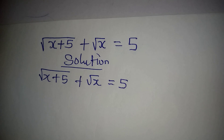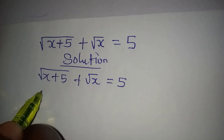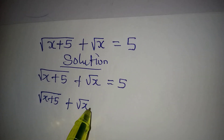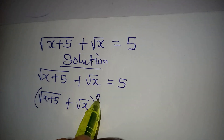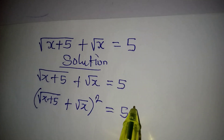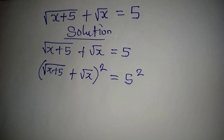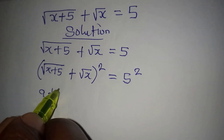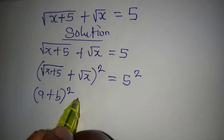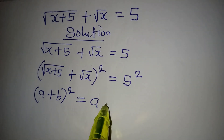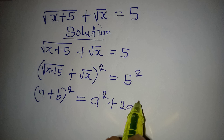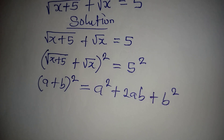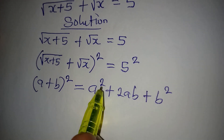We are going to square both sides. So I'm going to combine and square: square root of (x+5) plus square root of x, all squared, equals 5 squared. Remember, (a + b)² equals a² plus 2ab plus b².